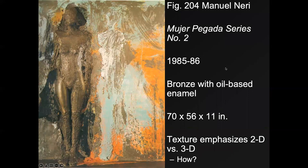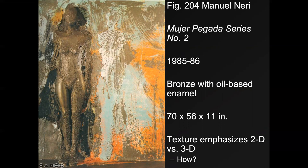Sometimes artists like to take advantage of texture to create content, like we saw with all the other formal elements. We're looking at Manuel Neri's piece — the title is in Spanish, but it's easy enough to understand once we see what it is. It's almost like the figure is walking out of the canvas, and the texture emphasizes the 2D canvas and the 3D bronze that is literally coming out of it. The parts that don't stick out as much have heavy impasto, like they're still trapped in it, while the step she's taking with her thigh and her hip is coming out. You can use texture to get an effect so people can read a meaning from it.